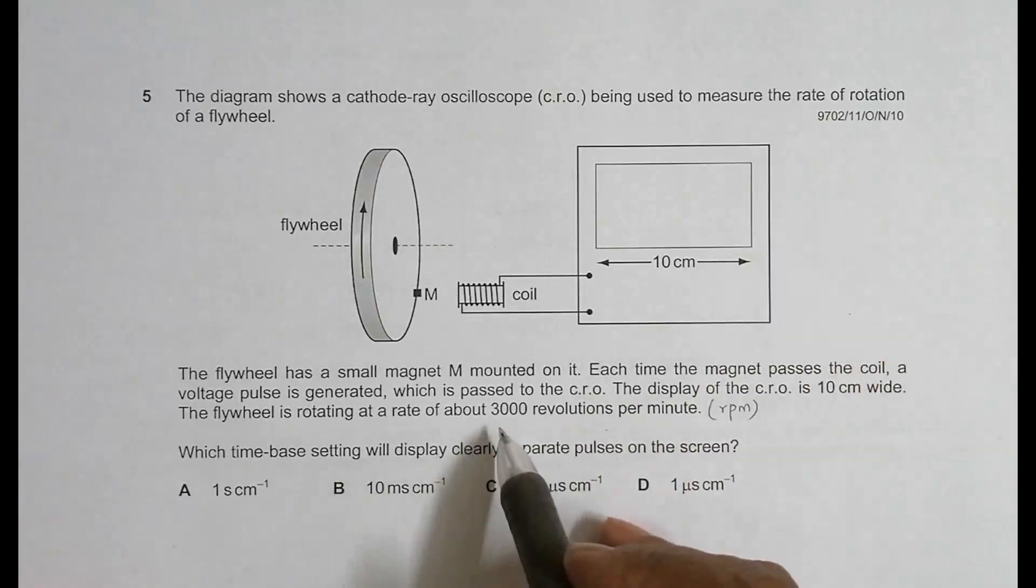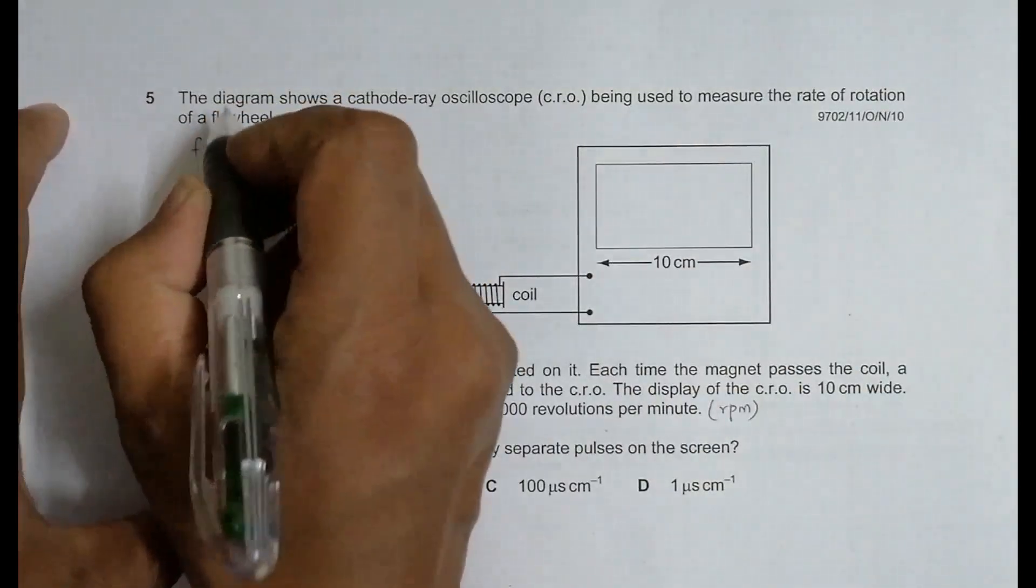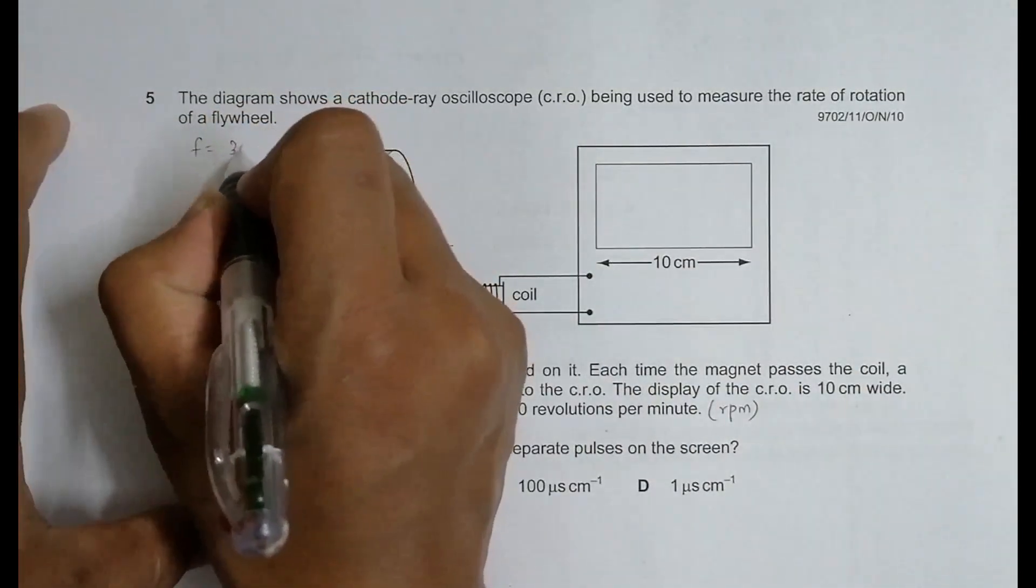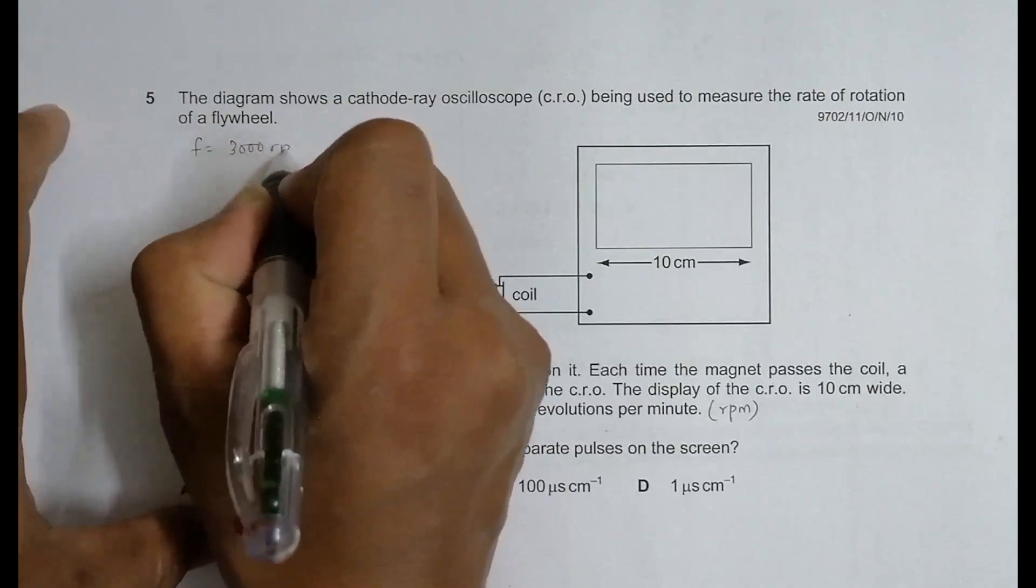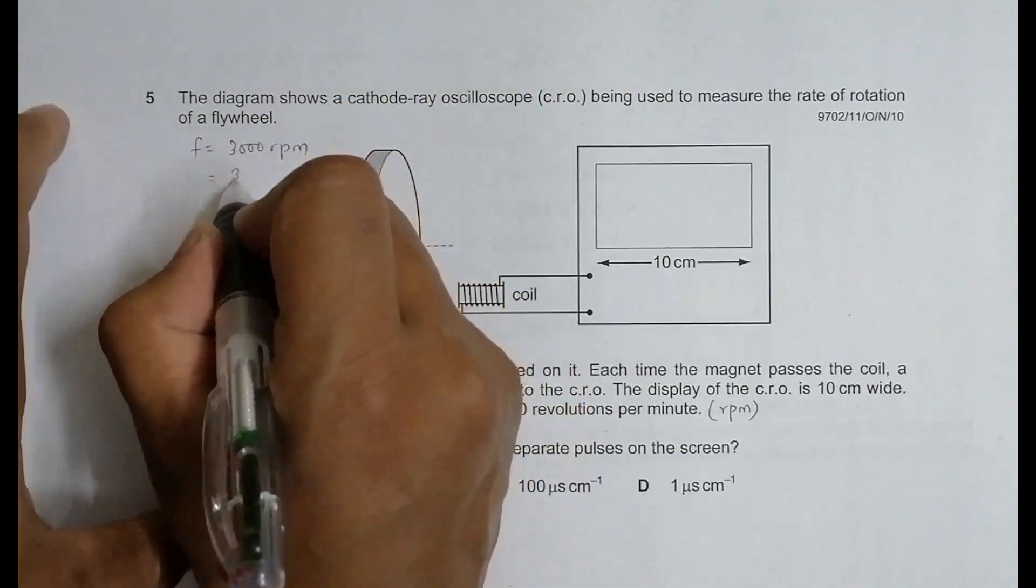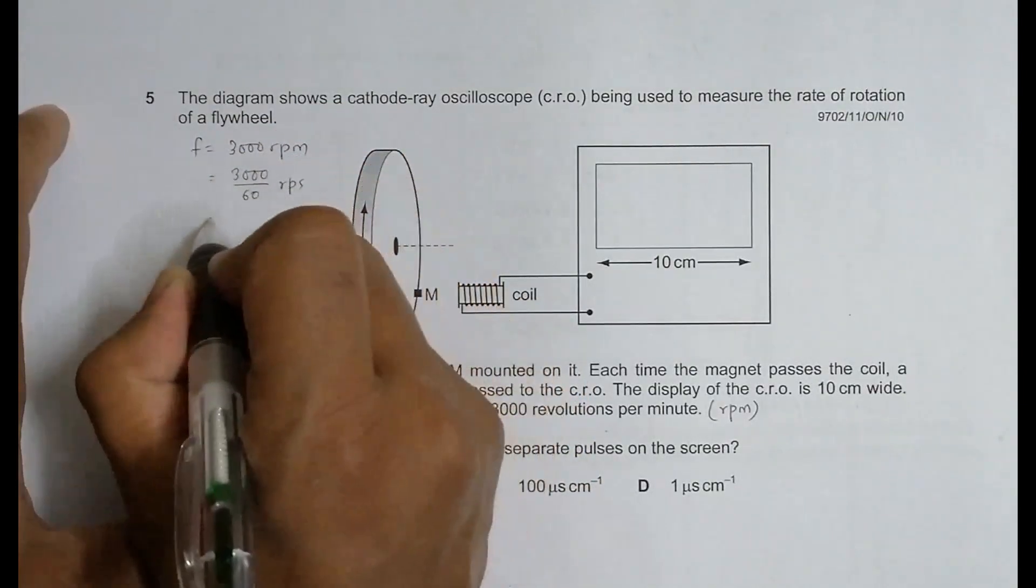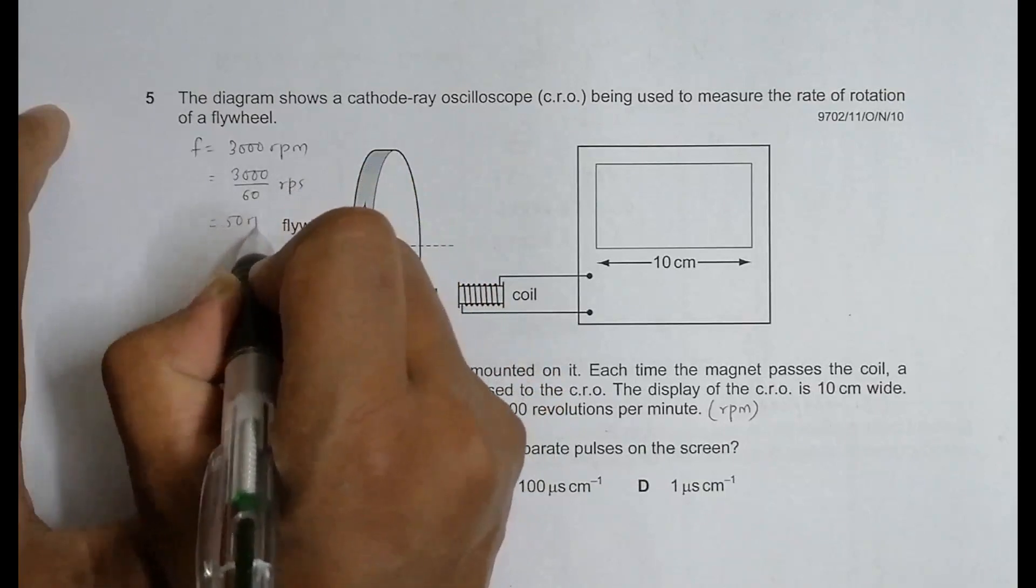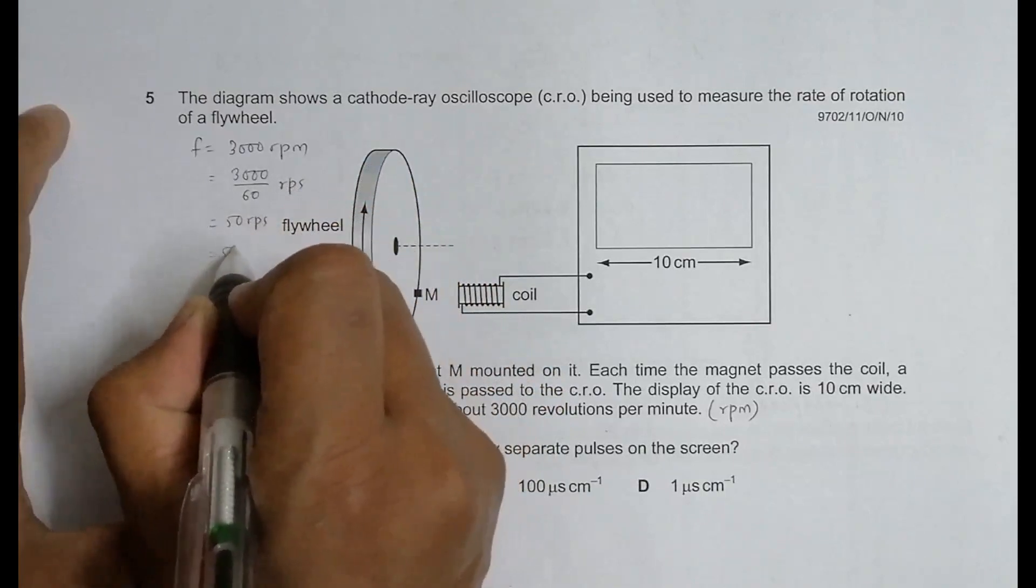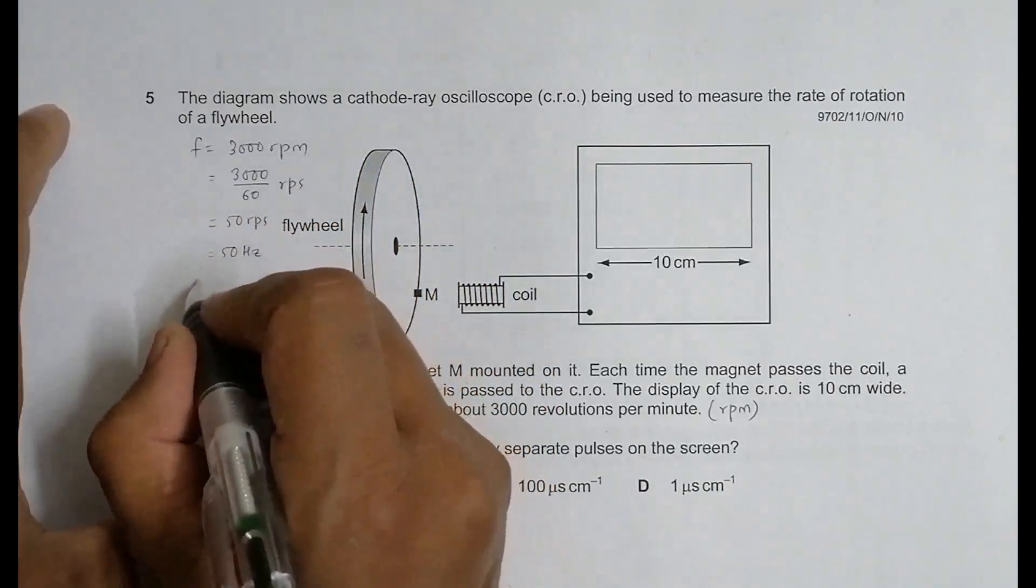So F equals 3000 RPM. I need to change this into seconds. It should be 3000 divided by 60, which equals 50 RPS or 50 Hertz.